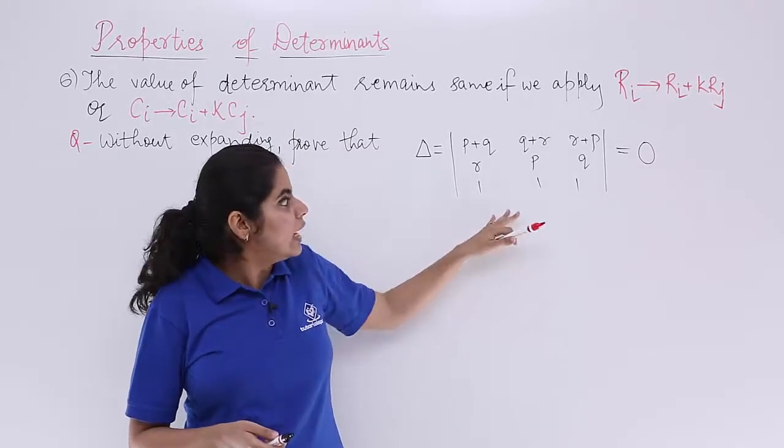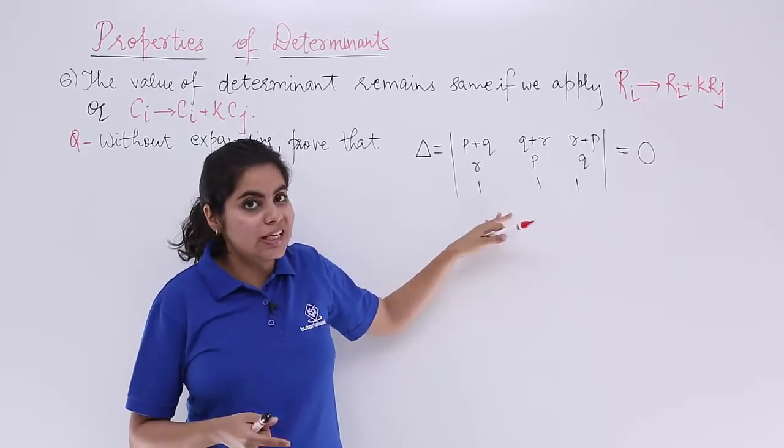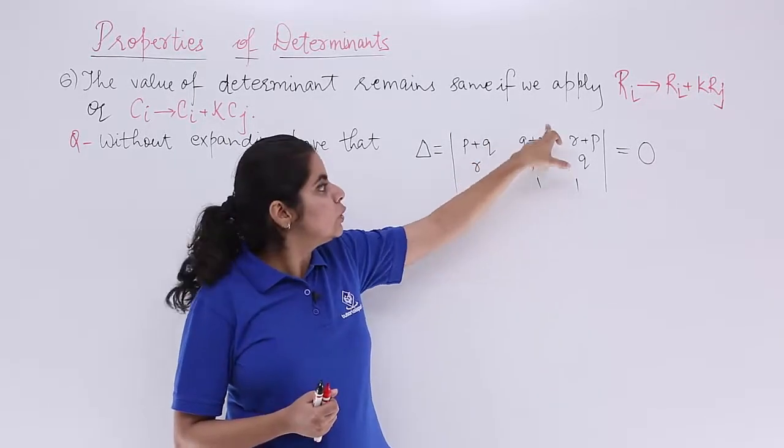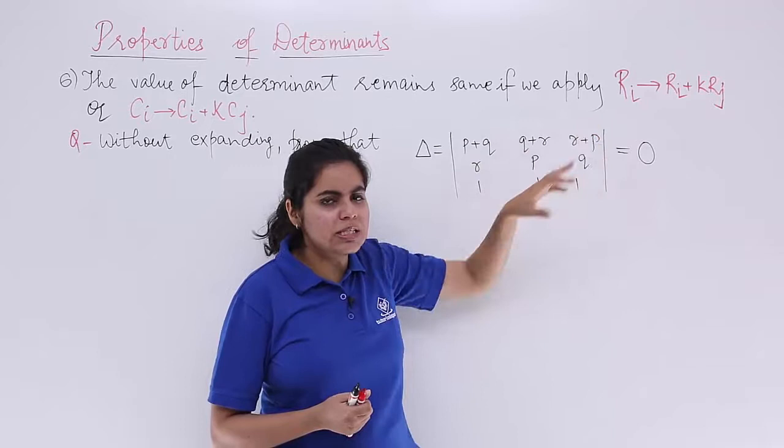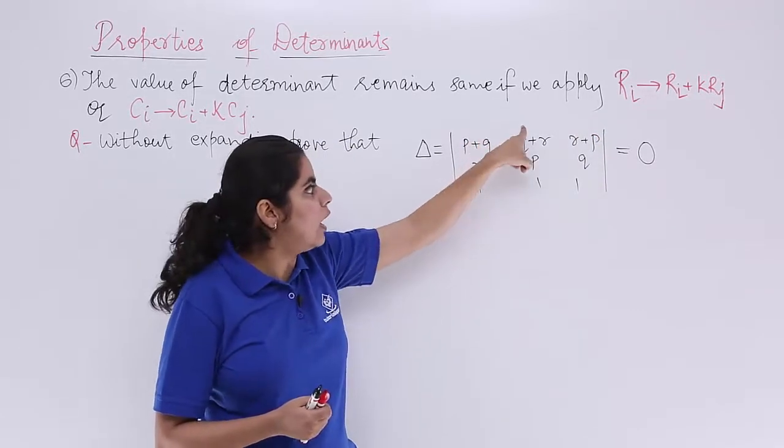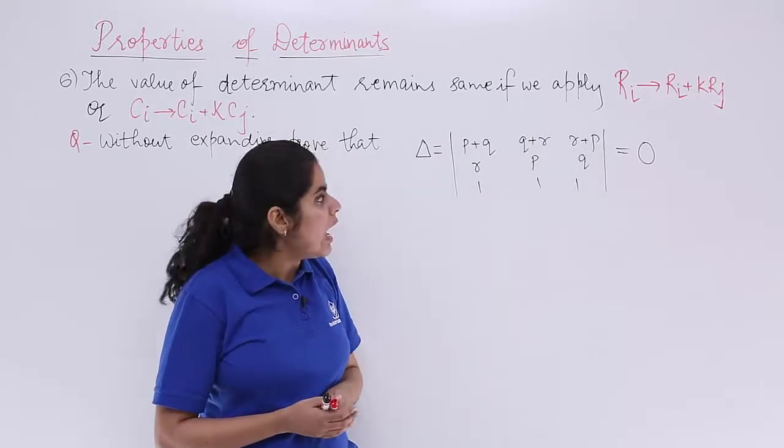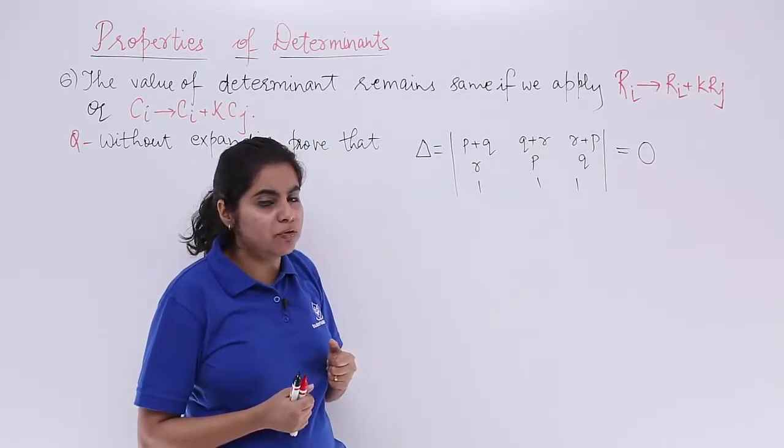Now, if you observe this question carefully, the determinant has PQ here, QR here, RP here. So it is a cyclic order, PQ, R, RP and some other thing if you can see carefully.